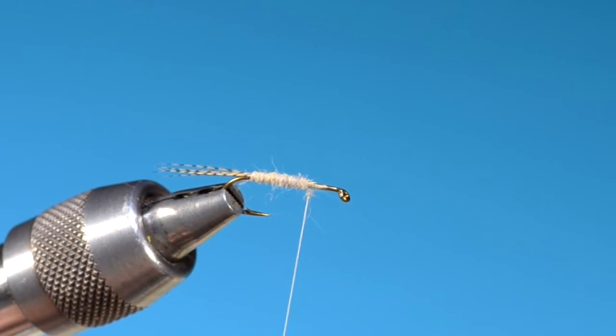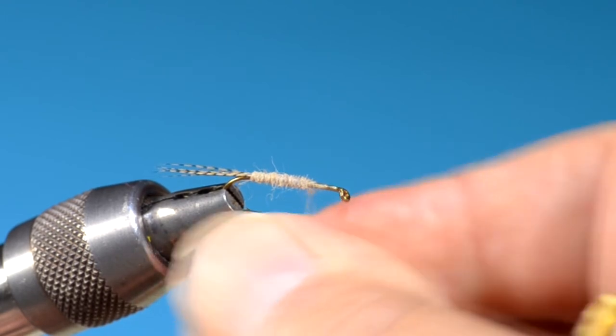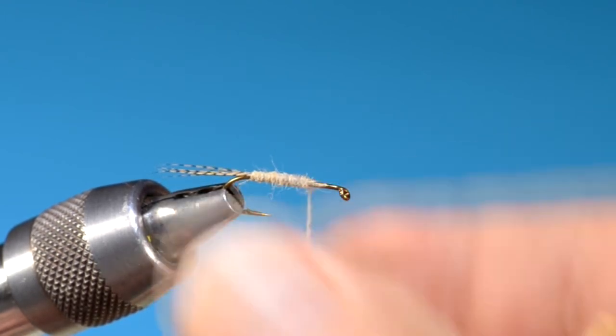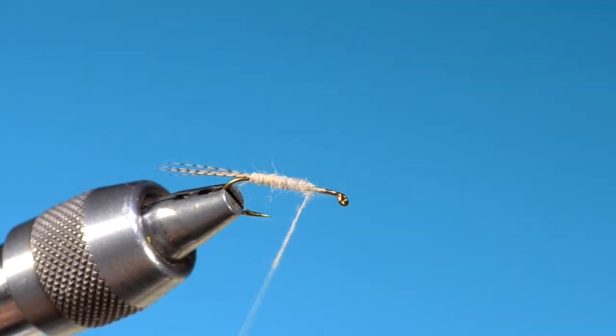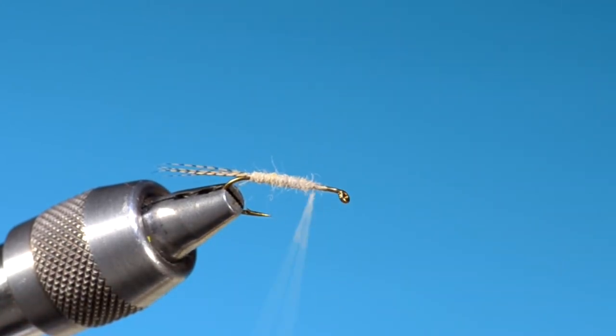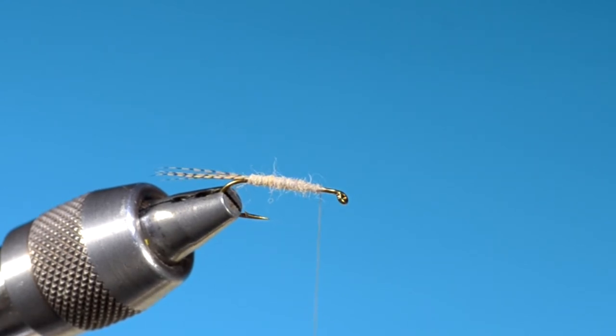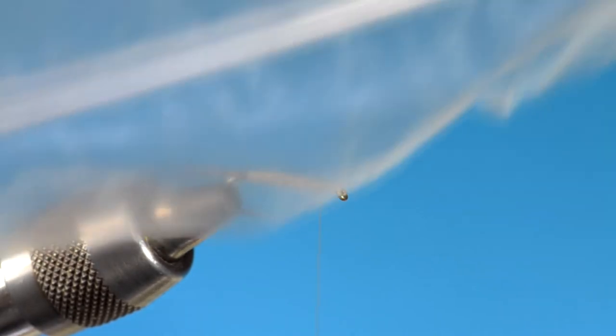You notice I haven't waxed this thread. Uni-thread, typically the kind you get in fly shops is waxed already. Very, it's got a very subtle wax in it. They do make an unwaxed thread too. But I think most of what's sold is waxed. I don't know that I've ever bought any of the unwaxed.